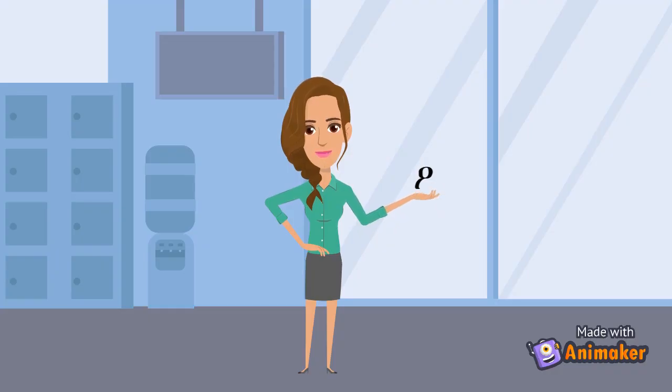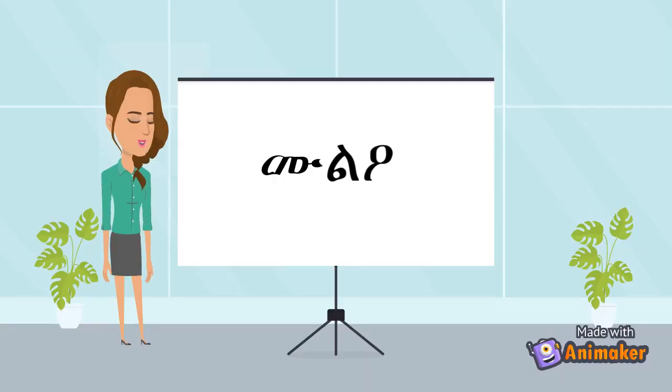Our seventh and last letter is O. One word that has the letter O is MULO.